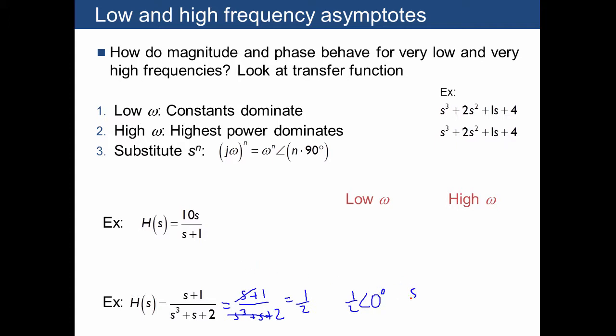Similarly, we have S plus 1 over S cubed plus S plus 2, where for high frequencies, the largest terms of S are going to dominate, and we just end up with 1 over S squared, which is going to give us 1 over omega squared at an angle of negative 180 degrees.